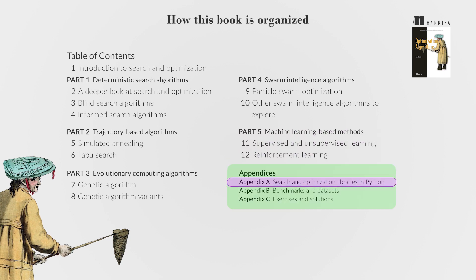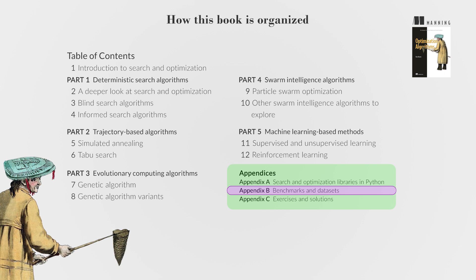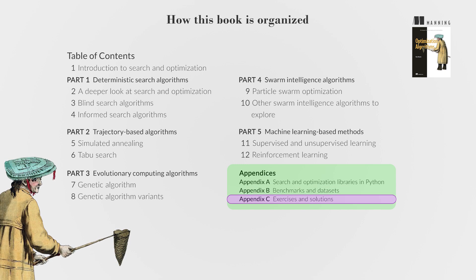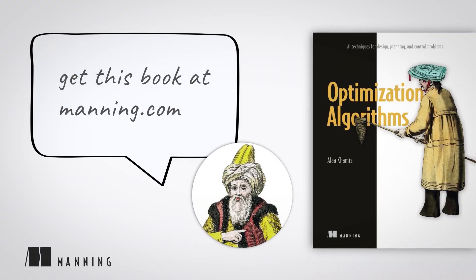Appendix A guides setting up the Python environment and introduces various state-of-the-art Python libraries for search and optimization. Appendix B provides resources on optimization test functions and data sets. Appendix C offers a comprehensive set of exercises and solutions, organized chapter-wise. Get this book at Manning.com.